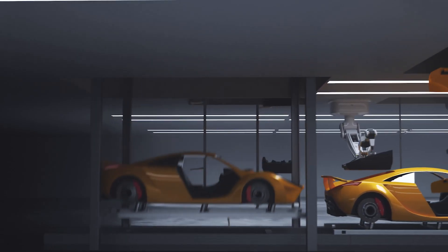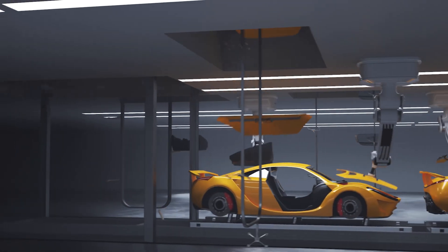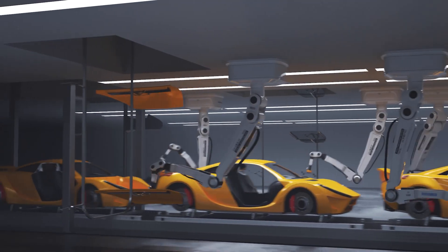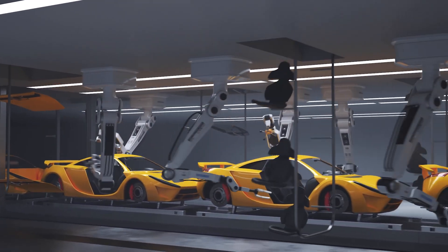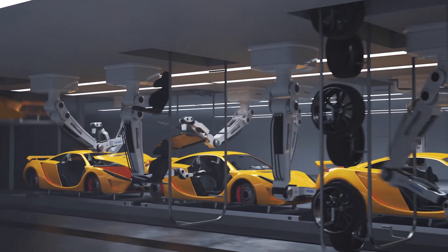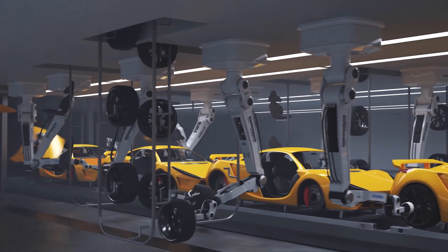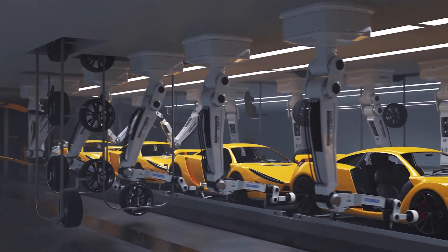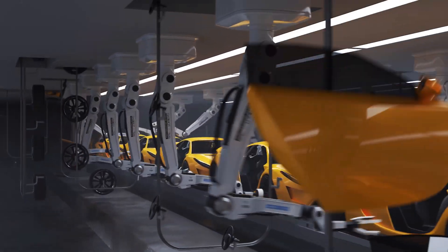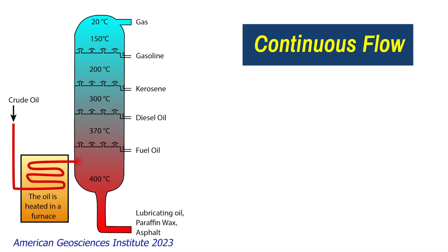You can simply press go and consistently produce that product over and over again. Let's think about cars, for example. If we're producing the exact same car with no variations, we can use continuous flow to produce that car — we start, press go, and let the manufacturing system do its thing. That would be an example of continuous flow.